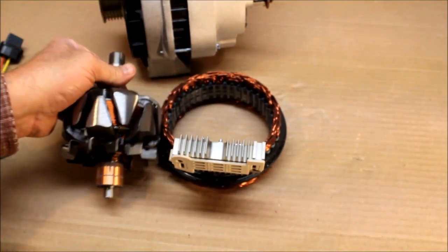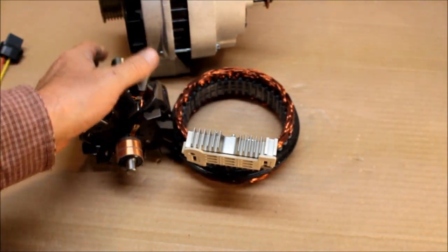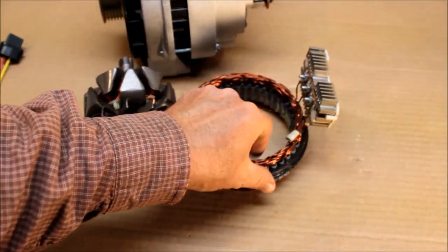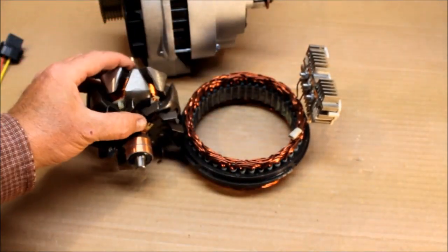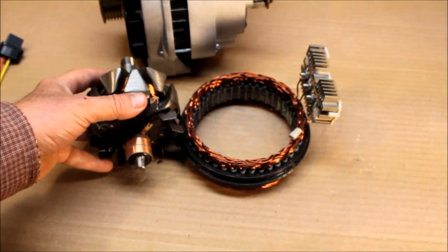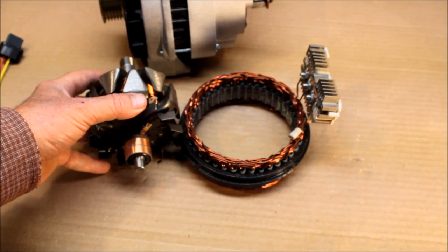The stator is this component right here, the outside field winding to an alternator. Here is the bridge rectifier, and this is the rotor. These are your main components to your alternator—you have your housings, your voltage regulator, and everything else.